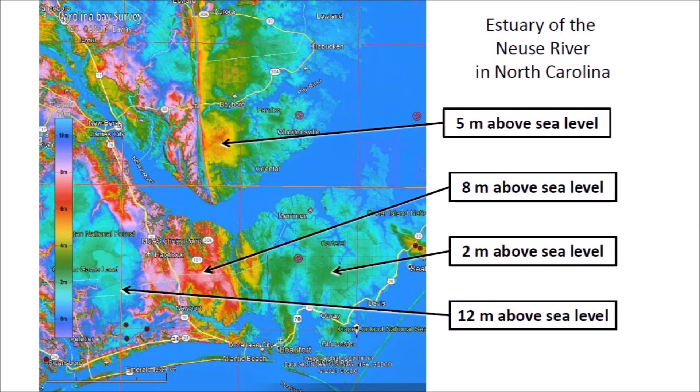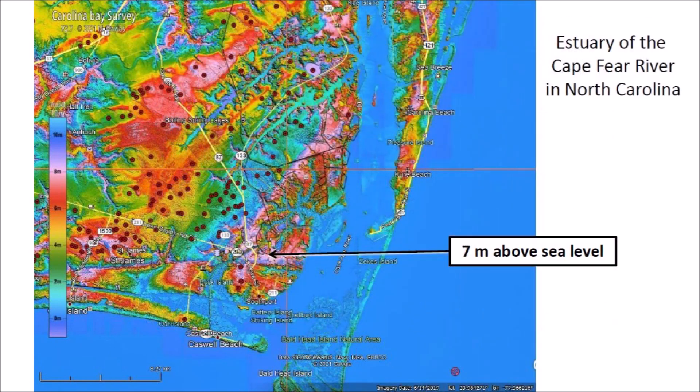The area in the estuary of the Neuse River in North Carolina does not have bays even in terrain that is 12 meters above sea level. This area is frequently buffeted by ferocious hurricanes with very high storm surges. The estuary of the Cape Fear River in North Carolina does not have any Carolina Bays at coastal elevations below 7 meters. This is consistent with the idea that storm surges of 7 meters or 23 feet can destroy the sandy structures of the Carolina Bays.